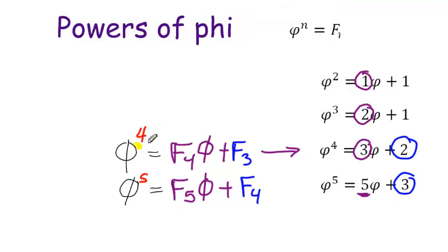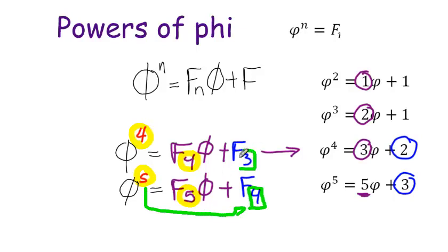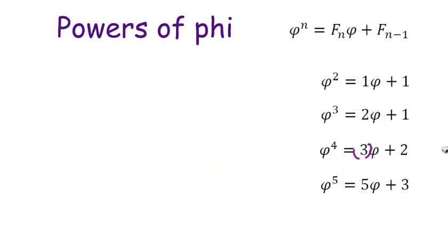Now when we look at n, notice that matches here. So phi to the nth is going to equal the nth Fibonacci number times phi plus another Fibonacci number. Well, how are you going to make sure and get, let's see, I need F sub four, but I'm starting with a five. And I need F sub three, but I'm starting with a four. It looks like that's going to be F sub n minus one. So the formula for powers of phi, phi to the nth power, is going to equal the nth Fibonacci number times phi plus the Fibonacci number before that.